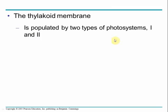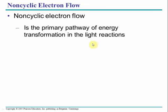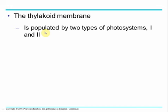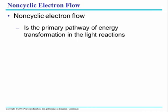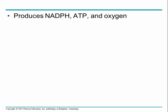Photosystem I and photosystem II are two types found within the thylakoid membrane. Both are important; both absorb sunlight. Photosystem II occurs first in the electron transport chain, and then photosystem I — a little confusing, but they deal with which wavelength of light they absorb best. Much of what we'll talk about is called non-cyclic electron flow, largely similar to what we saw in respiration. It's the primary pathway.